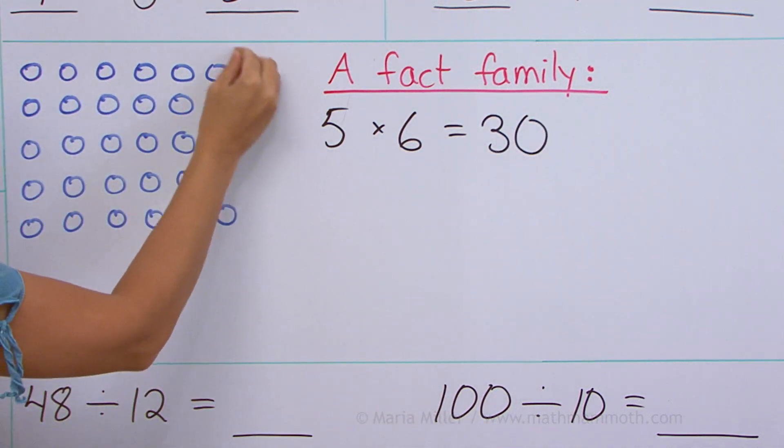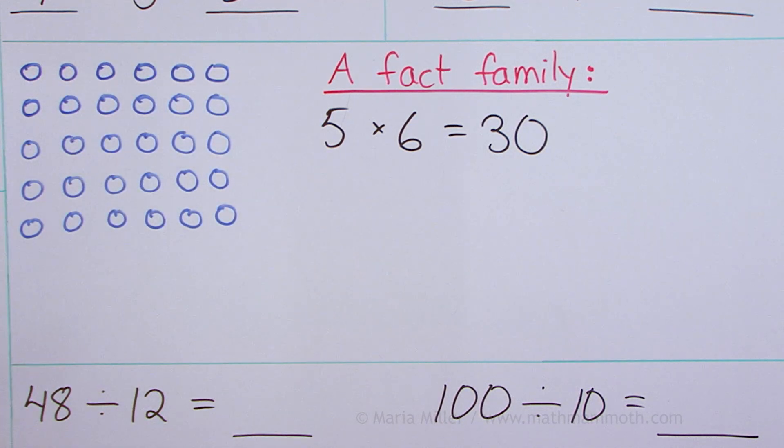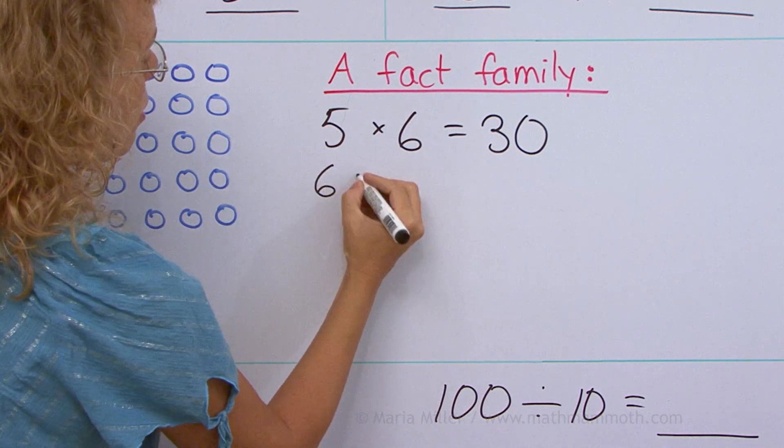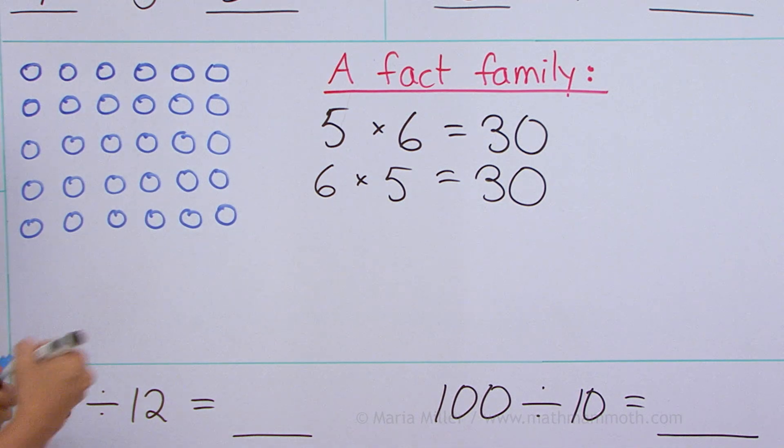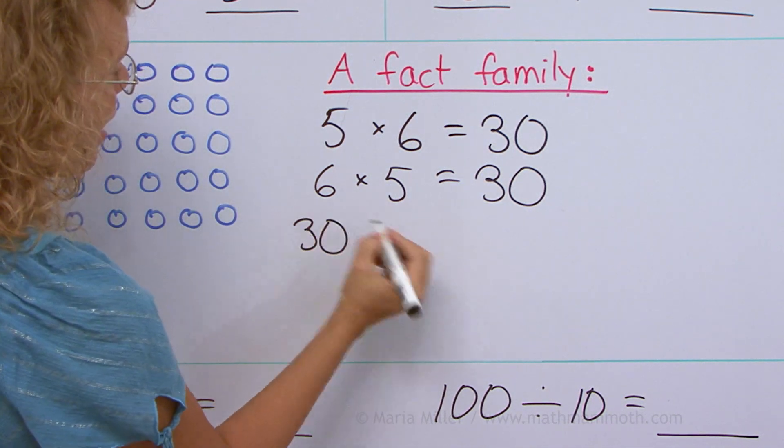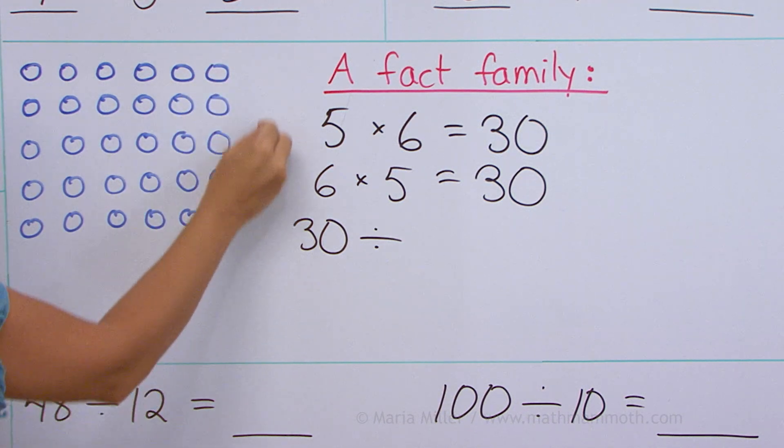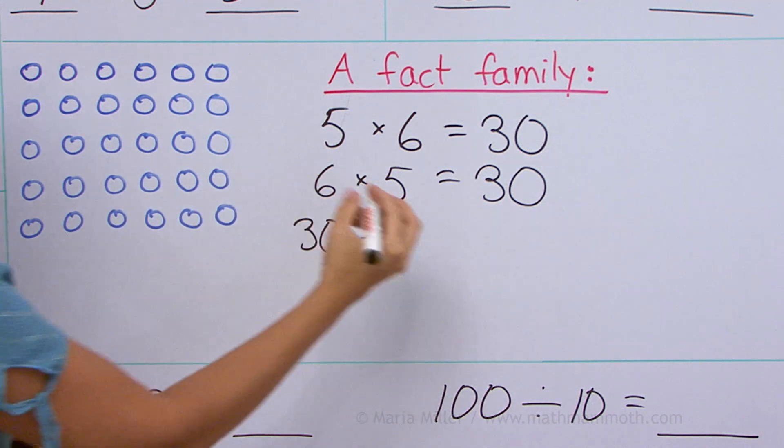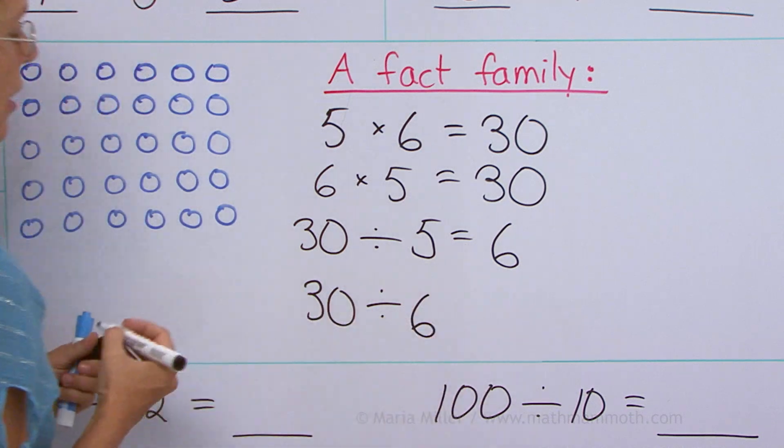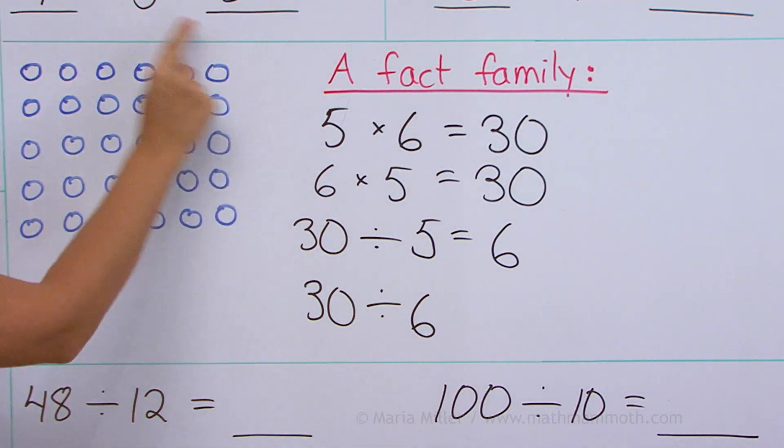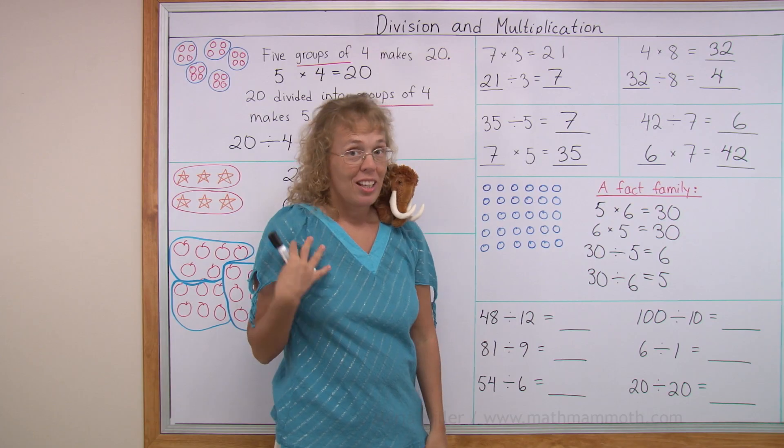And then I can think of these columns as groups. So I get groups of five this way. And this time I would get six groups. So six groups of five makes 30. And then the two divisions the same way. I start with 30 and I can divide 30 into groups of five, for example, this way. And if I do it that way, I get six groups. But if I divide 30 into groups of six this way, then I get five groups. So that is my fact family.